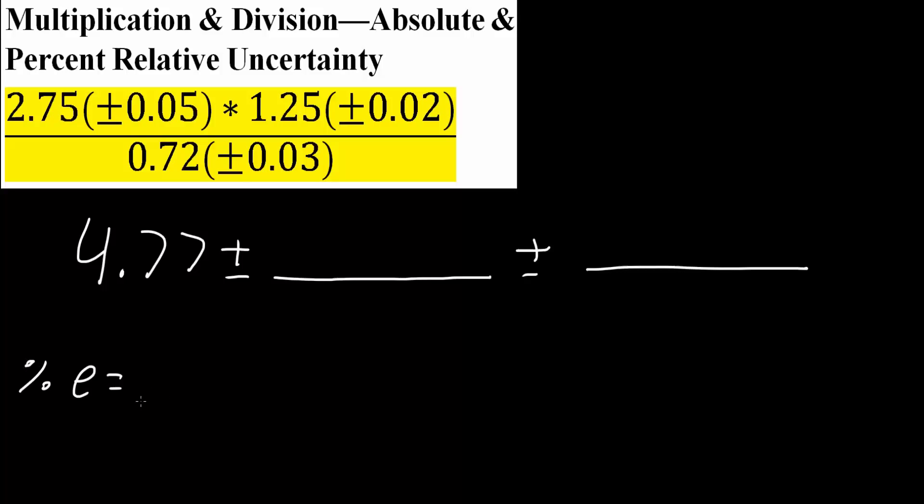So we would get the square root. What we have is 0.05, and we divide this by 2.75. Next, we multiply this number by 100, close parentheses, then we square it.